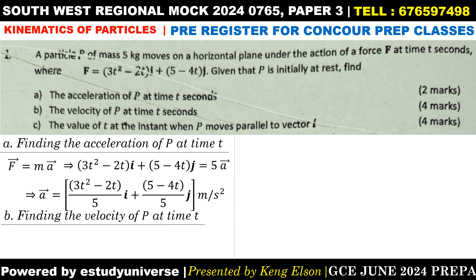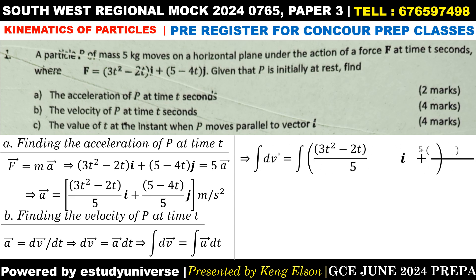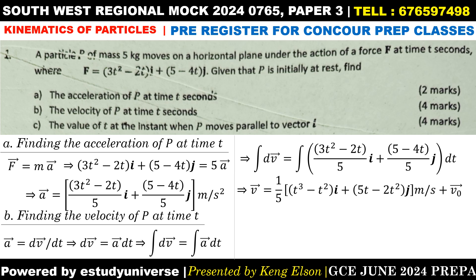For the second part we need to find the velocity of the particle. The velocity is the integral of the acceleration with respect to time, while the acceleration is the derivative of the velocity with respect to time — integration and differentiation are reverse processes. The acceleration is dv/dt, so cross-multiplying gives dv = a dt, a first-order differential equation with separated variables. Integrating both sides: we integrate acceleration with respect to time and replace a with the expression from part one.